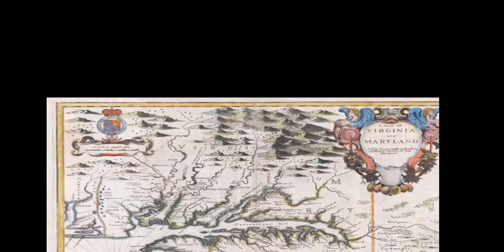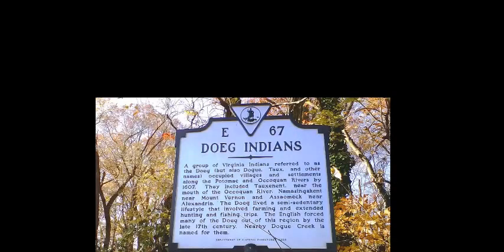Prior to 1676, there were restrictions on where English settlers could go, to avoid further skirmishes with the Dogue Indians. When Nathaniel Bacon came into this area, he noticed this conflict that was brewing and wanted to exploit it for his personal gain. He went to Governor Berkeley and explained the situation.